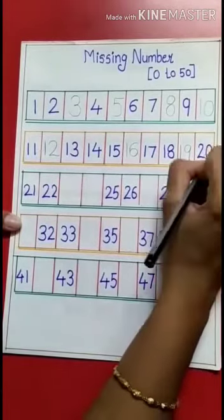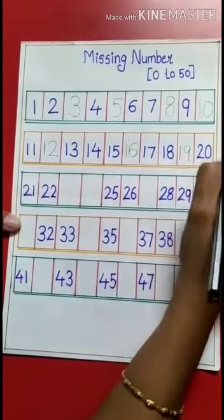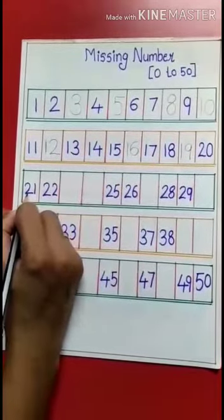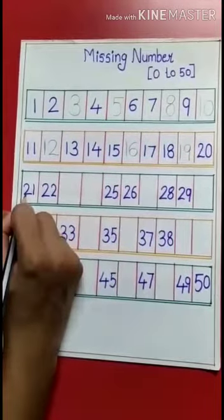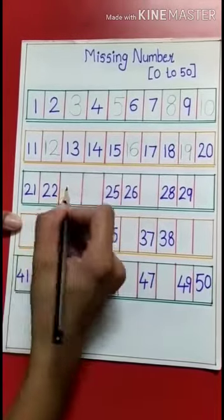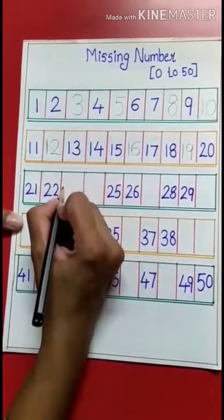18, 18. Now yes, it's 19, 19. And after 19, 20, 20, 20, 20.